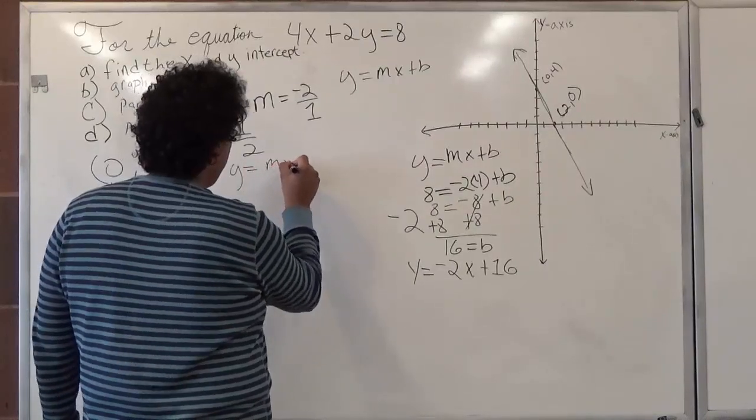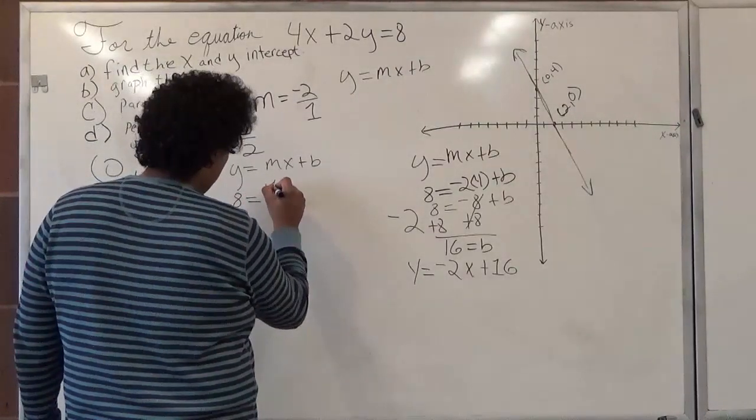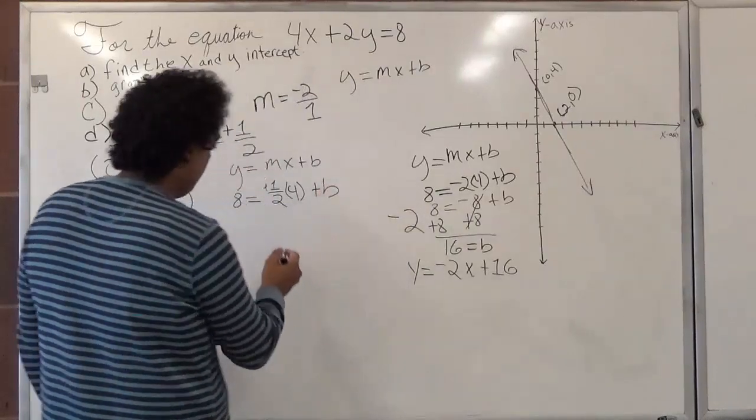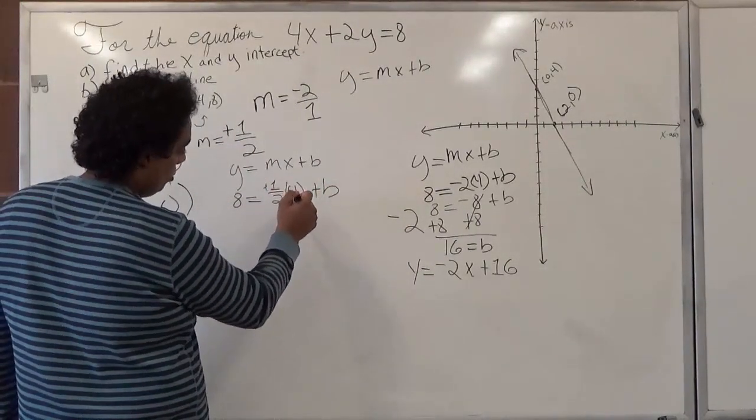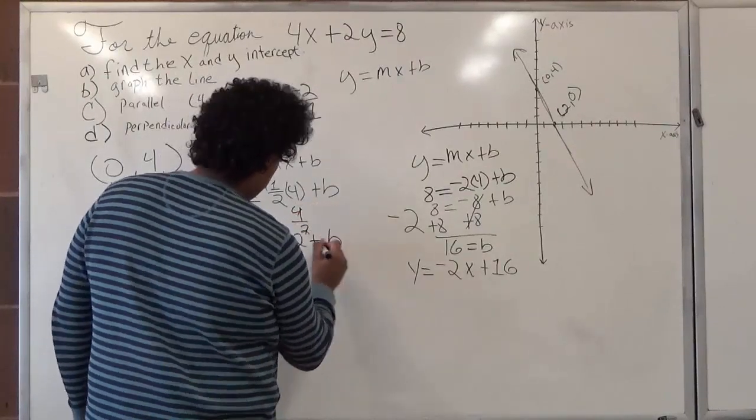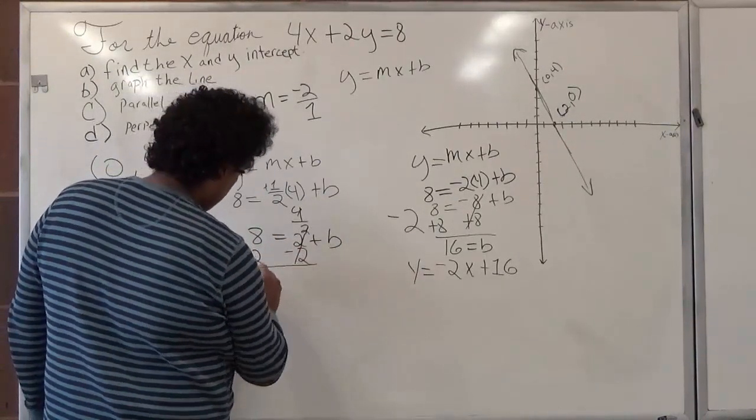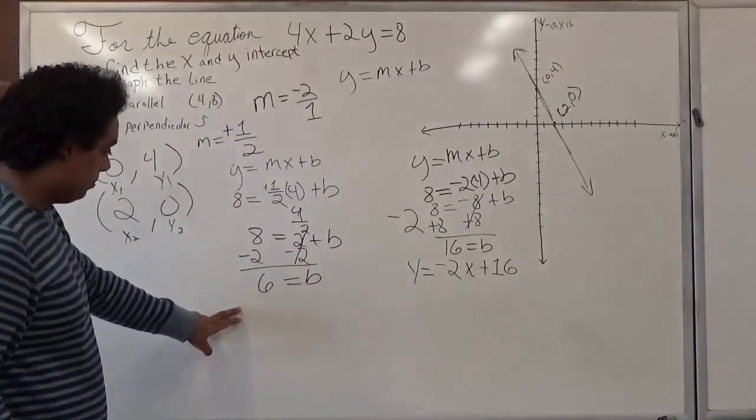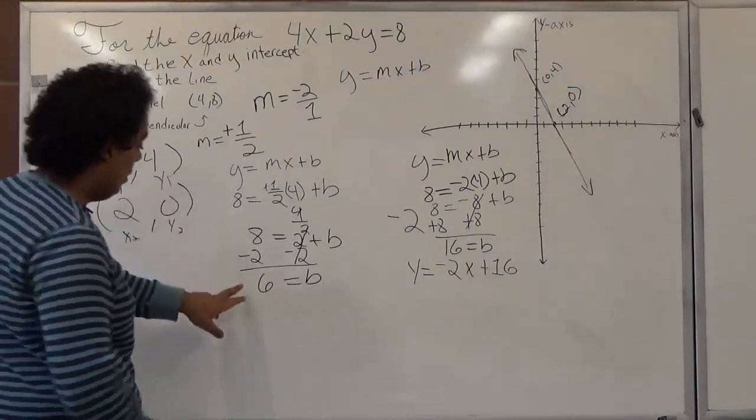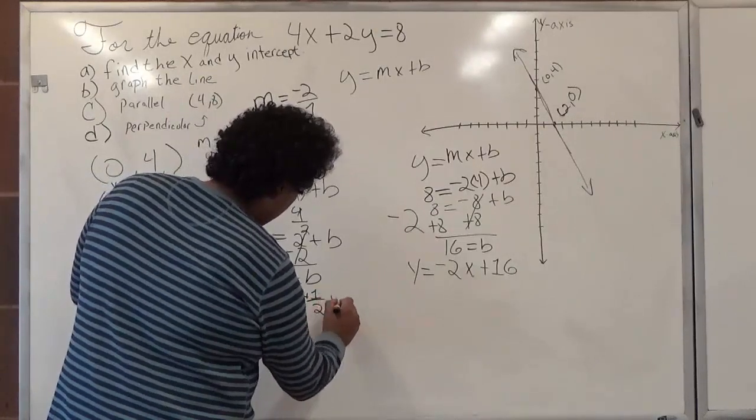So y equals mx plus b, again. y is 8, which is equal to positive 1 half, x is 4, plus b. 1 half times 4 is 4 over 2. 4 over 2 is 2. So we're going to subtract 2 on both sides. 8 minus 2 is 6. And b is equal to 6. So the equation of a line perpendicular to the 4x plus 2y equal to 8 would be y equal to positive 1 half x plus 6. Thank you.